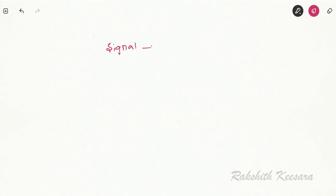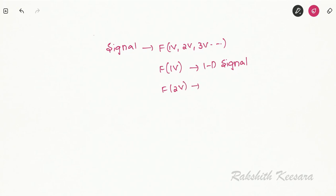A signal can be a function of one variable, two variables, three variables, or so on. If it is a function of one variable then the signal is called a one-dimensional signal. If it is a function of two variables then it is called a two-dimensional signal. And if a signal is a function of more than one variable this is called a multi-dimensional signal.